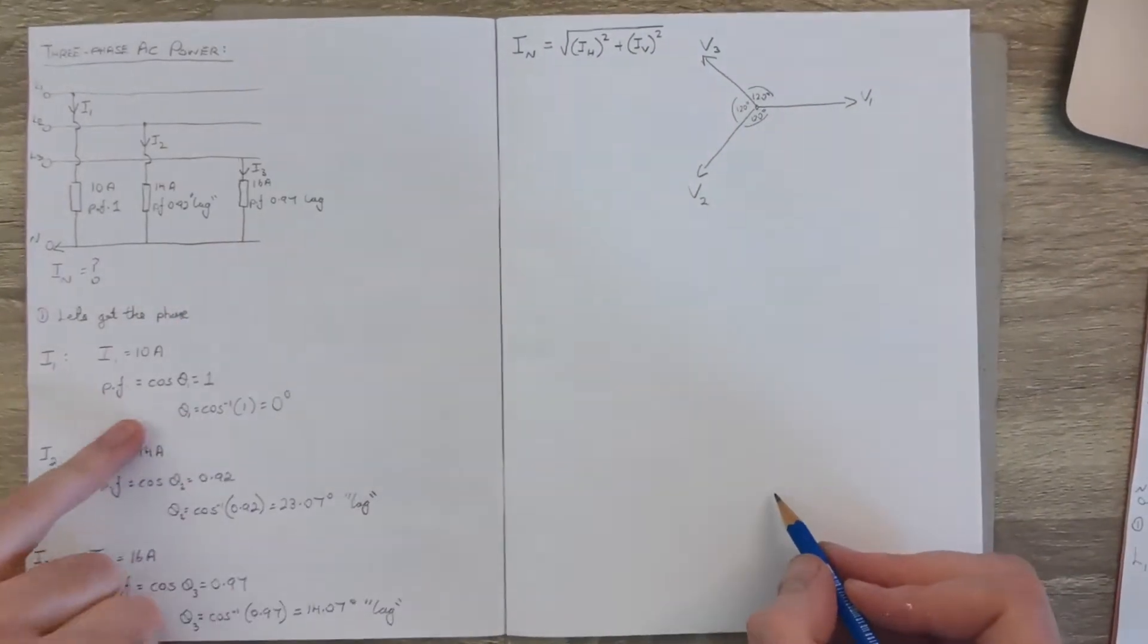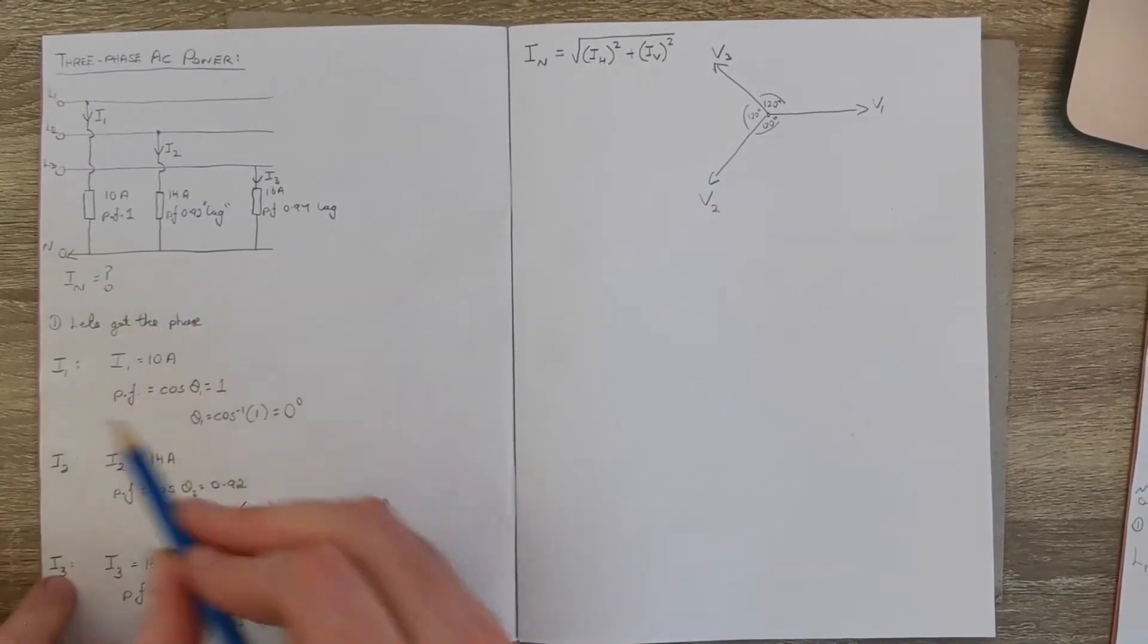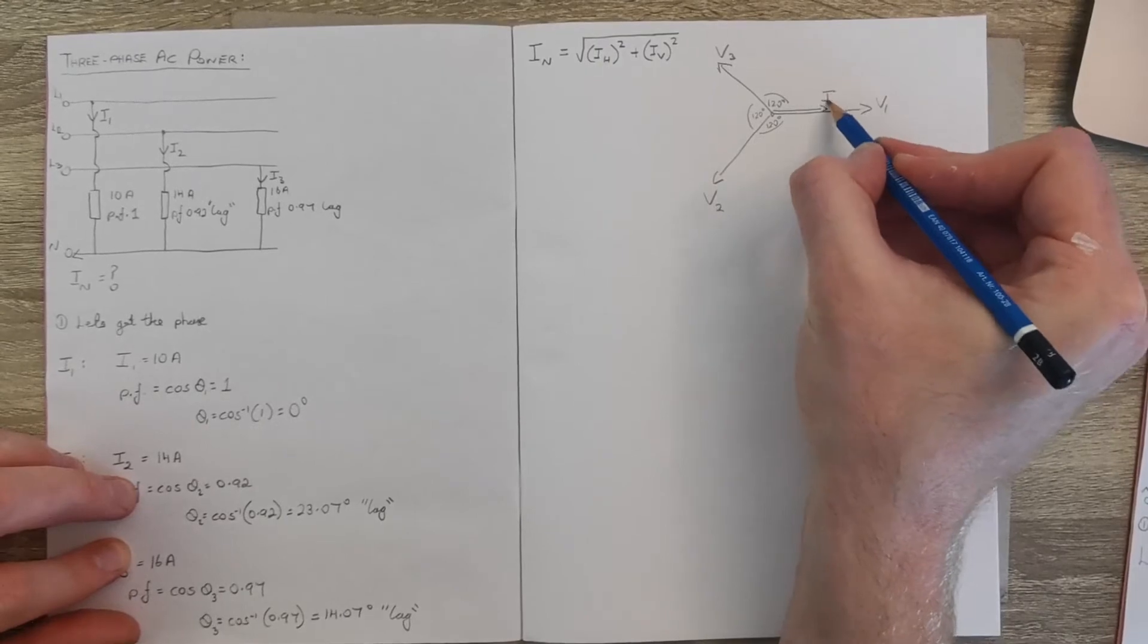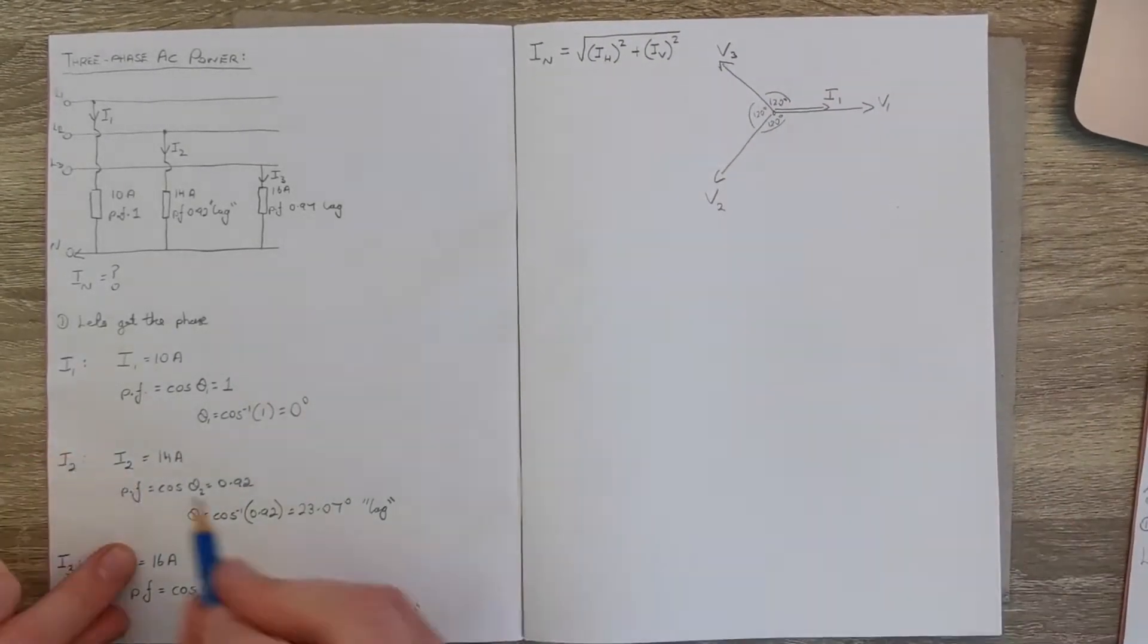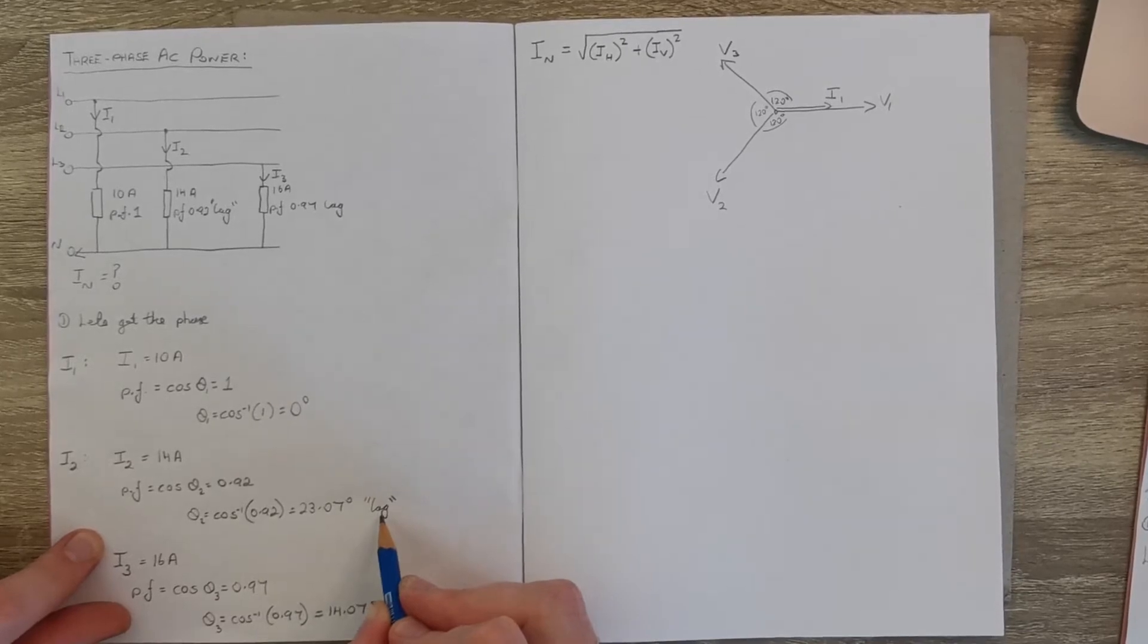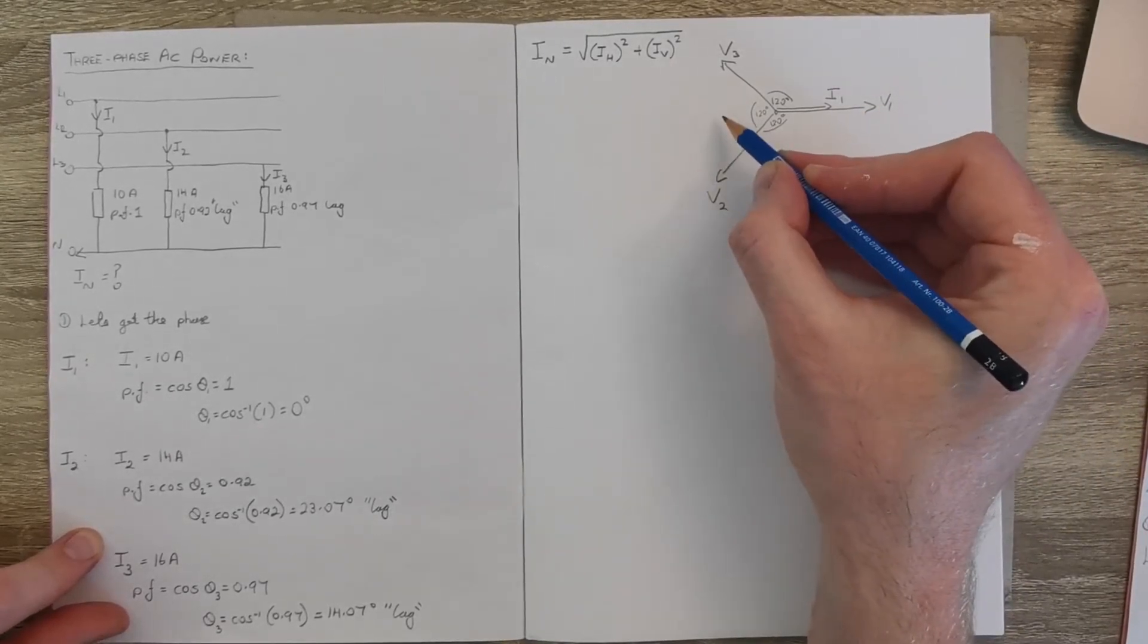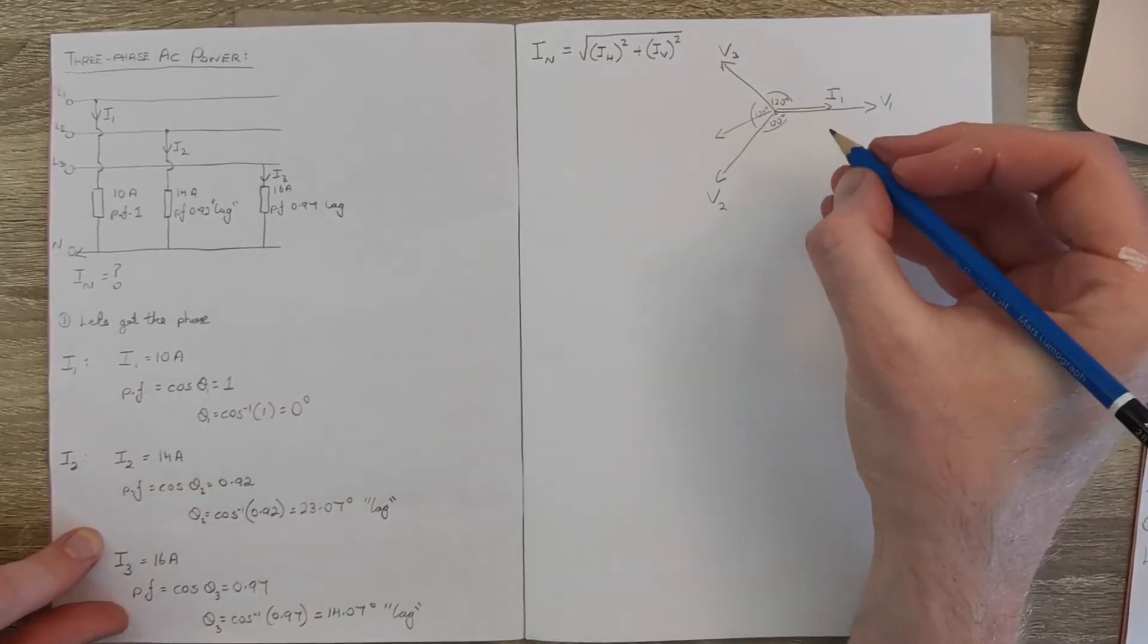And we can also put our currents on this phasor diagram. So we know that i1 has a phase of 0 degrees, so i1 is in phase with V1, the voltage driving the first current. We look at i2 and we see there's an angle of 23.07 lag, so if we want to work out the actual angle of this one, it's going to be minus 120 minus 23.07, so i2 is down here somewhere. Remember this is just a sketch, it's not to scale.